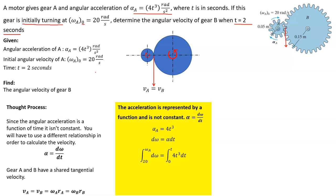This is a simple integration using the power rule. On the left side we get omega_A minus 20. On the right, the 4 comes outside, and applying the power rule — add 1 to the exponent of T divided by the new exponent — we get 4 over 4 times T to the 4th. Evaluating from 0 to 2 seconds: at T equals 0 the whole term goes to zero, so omega_A minus 20 equals T to the 4th. Adding 20 to both sides: omega_A equals T to the 4th plus 20.